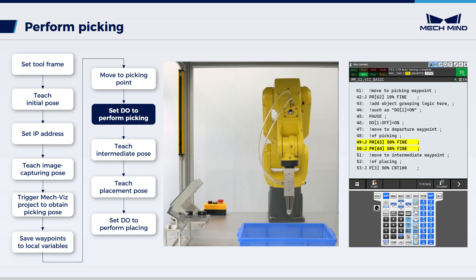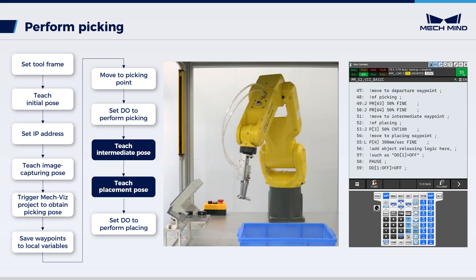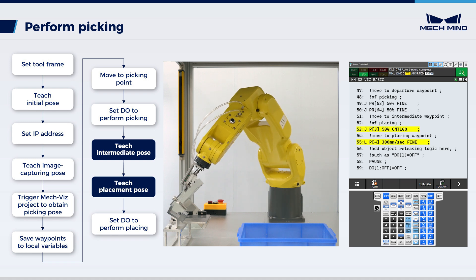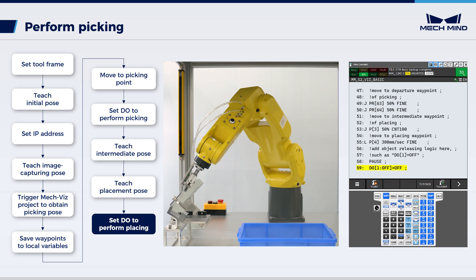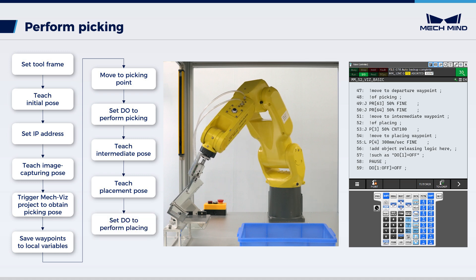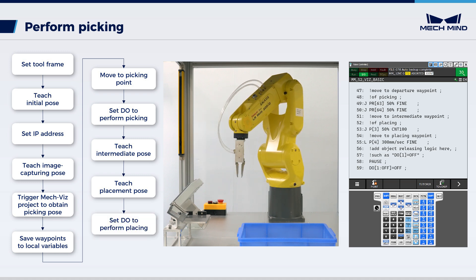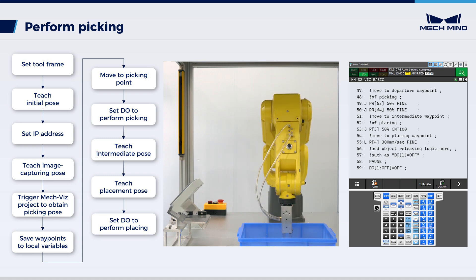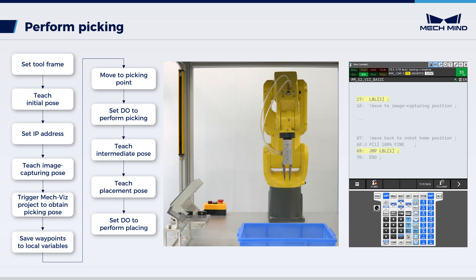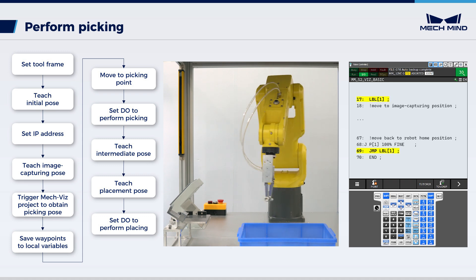Next, move the robot to the retreat point and the exit bin point. Then move the robot to the intermediate position and the placement position, and record the poses respectively. After approaching the place point, set DO to open the gripper to perform placing. In real application scenarios, please modify the general output signal ID and state according to the actual situation. We have completed the configuration of the pick-and-place program for the robot. We can add a loop statement in the program when multiple pick-and-place tasks are required.